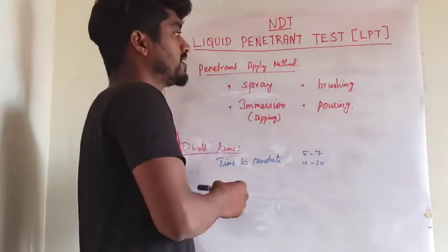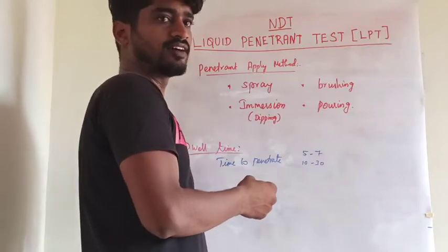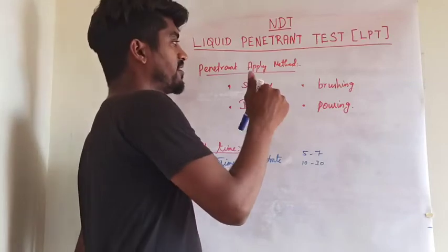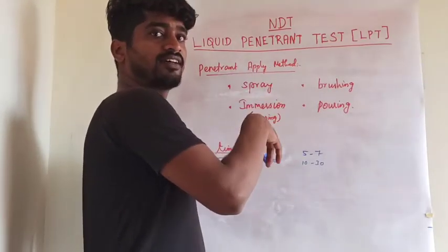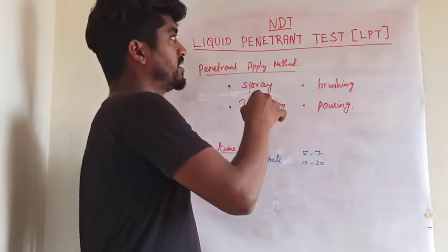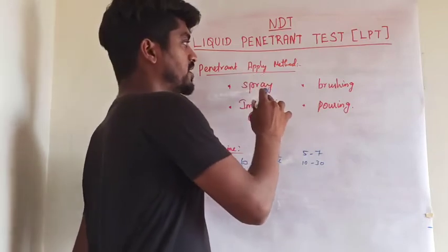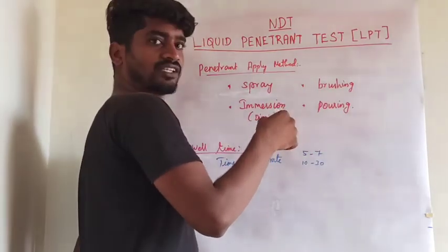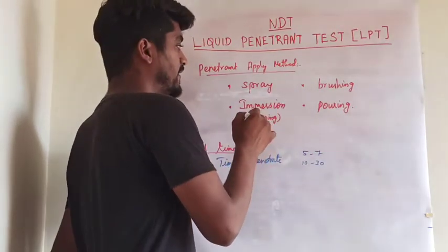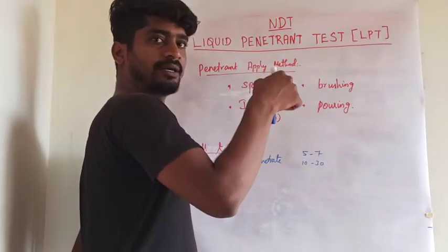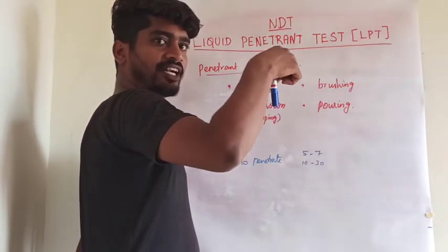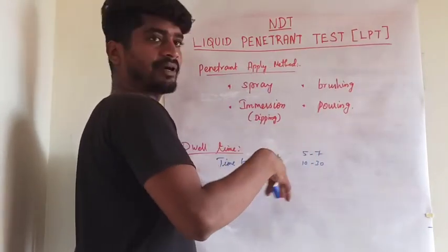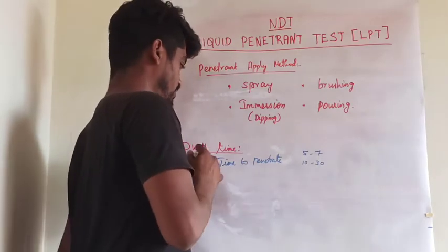The penetrant application methods are as follows. First is spray — using a spray bottle or sprayer to apply penetrant on the surface of the metal. Second is brushing — applying the penetrant with a brush. Third is immersion — dipping the metal component inside the penetrant. Fourth is pouring — pouring the penetrant directly on the surface of the metal.